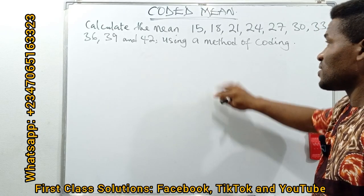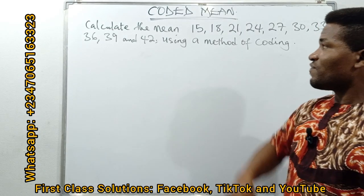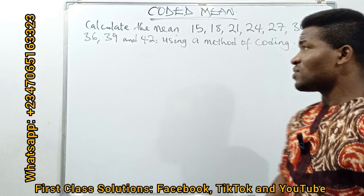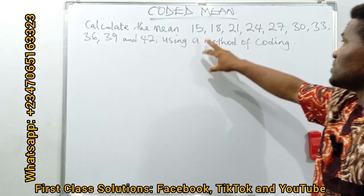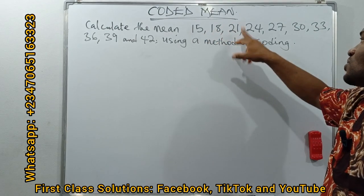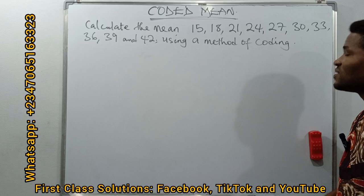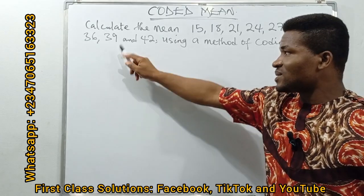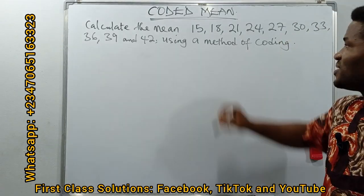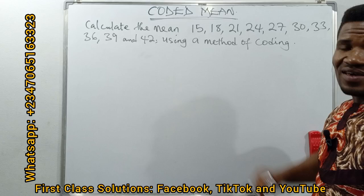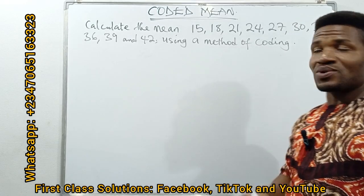Hi everyone, let's take a look at this together. This is a past question derived from the National Teachers Institute. They want us to calculate the mean of this distribution: 15, 18, 21, 24, 27, 30, 33, 36, 39, and 42 using a method of coding.